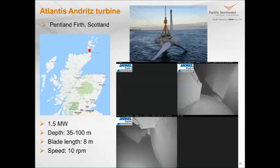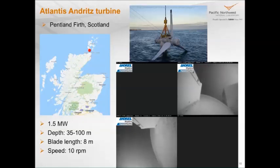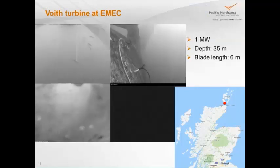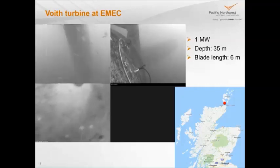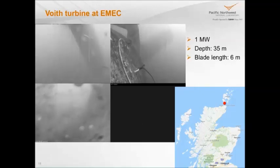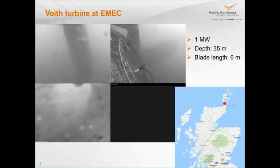You see about an eight-meter blade, and you see how slowly it is turning. That's probably the biggest point — these are not very fast-moving devices. Another turbine up in Northern Scotland, the Voith turbine deployed at the European Marine Energy Center, EMEC, is also at about 35 meters. You can see some fouling on the upper right camera. In the upper left camera, you see fish in close proximity to the blade — they're small fish, but clearly pretty unperturbed by the turbine.